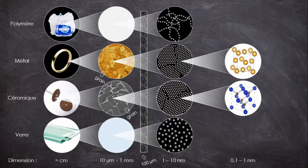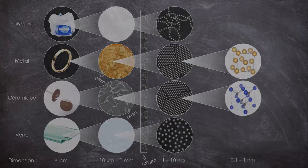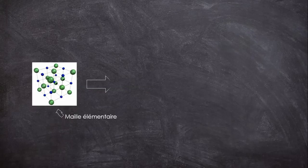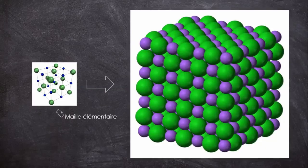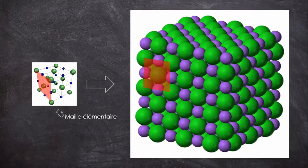En fait, c'est un tout petit volume constitué de quelques atomes qui se répètent un très grand nombre de fois dans tout le grain. Ce petit volume, c'est ce que l'on appelle une maille cristalline, ou maille élémentaire. Et un corps constitué d'un grand nombre de ces mailles, donc les grains de tout à l'heure, est appelé un cristal, ou même un monocrystal pour être plus précis.